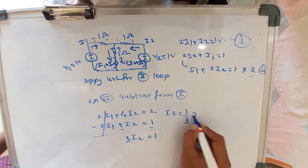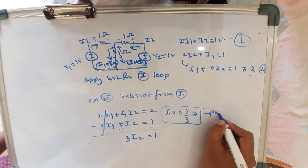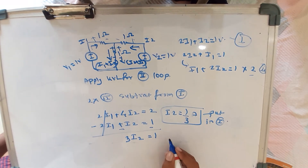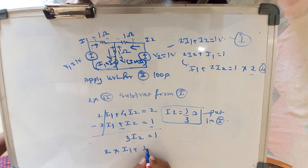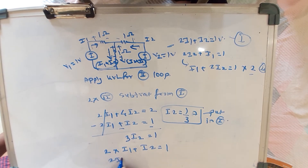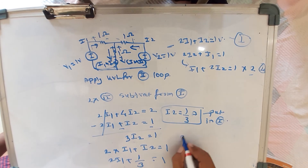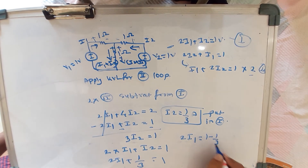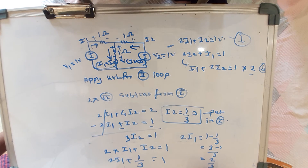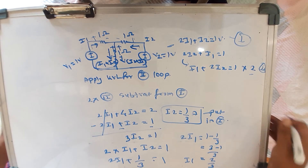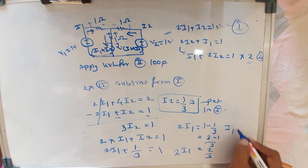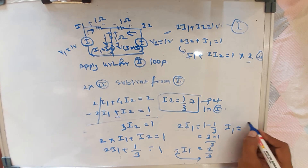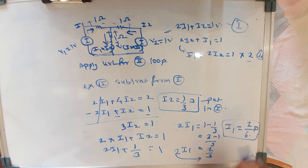So I2 equals 1 by 3 amperes. Substituting into the first equation: 2I1 plus (1/3) equals 1, so 2I1 equals 1 minus 1/3, which is 2/3. Therefore I1 equals 2/6 amperes, which simplifies to 1/3 amperes. We have now found the values of both I1 and I2.